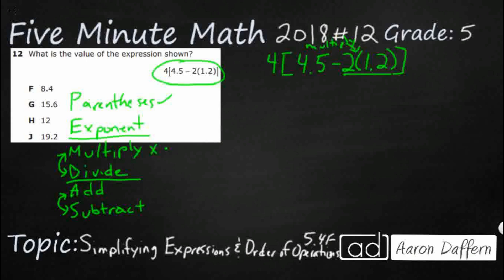Just because it gets a little bit confusing, it can look like a variable, it can look like a decimal. So this is really 2 times 1.2. So this parentheses is simply holding that 1.2 and making it a multiplication.